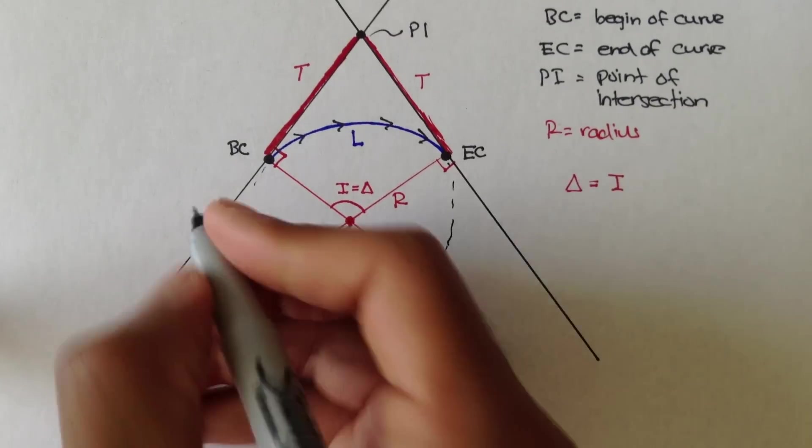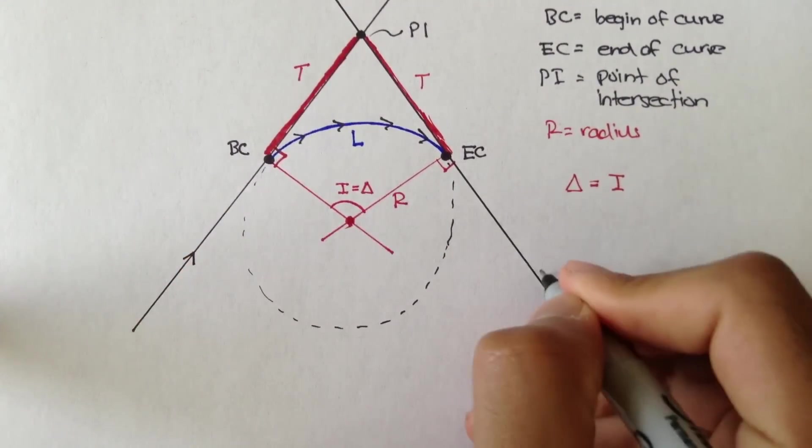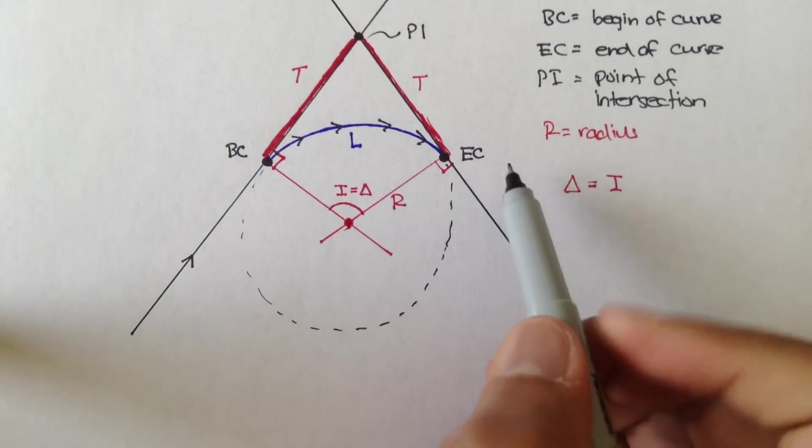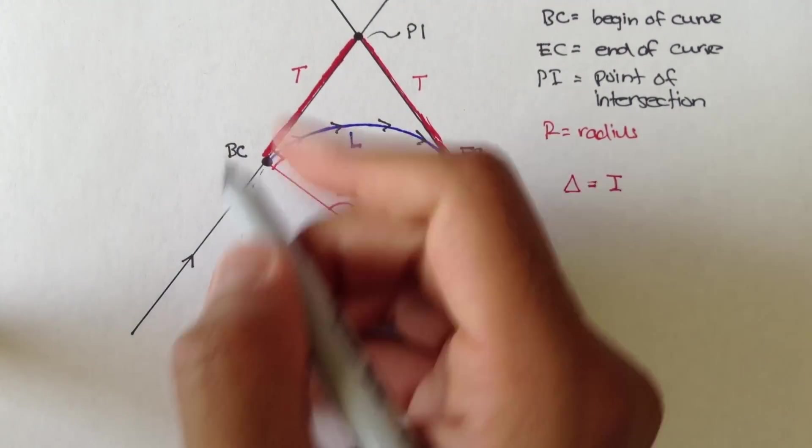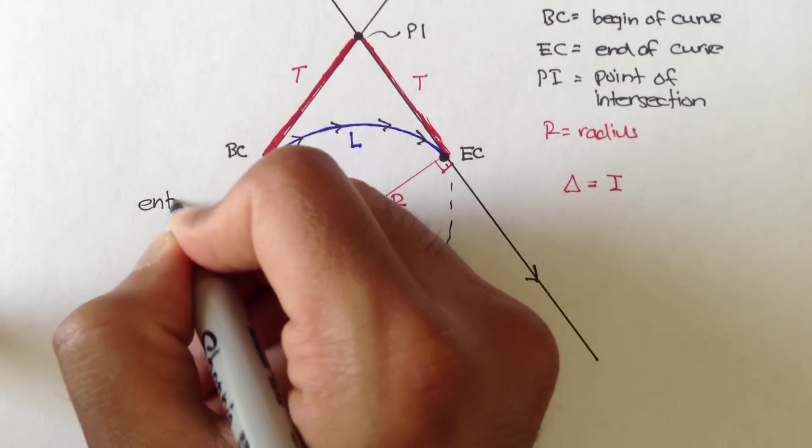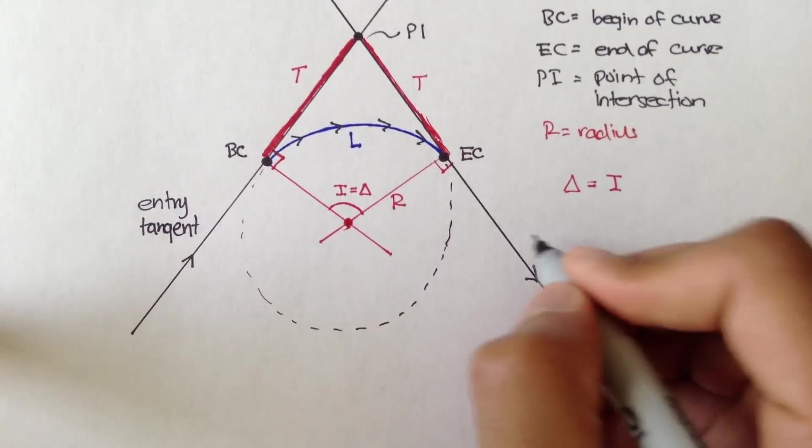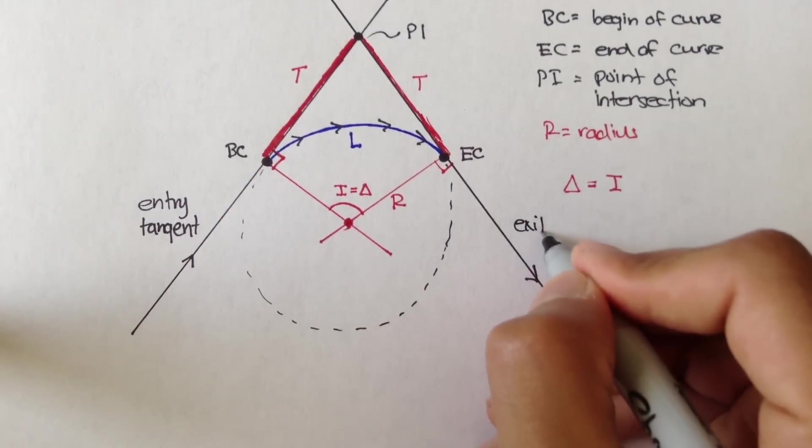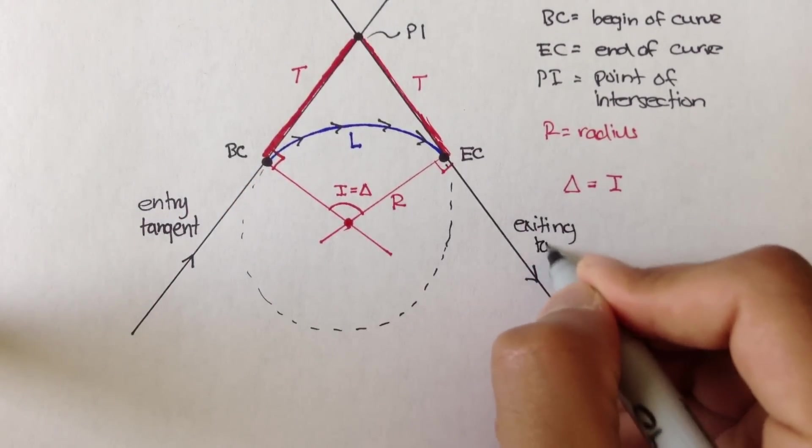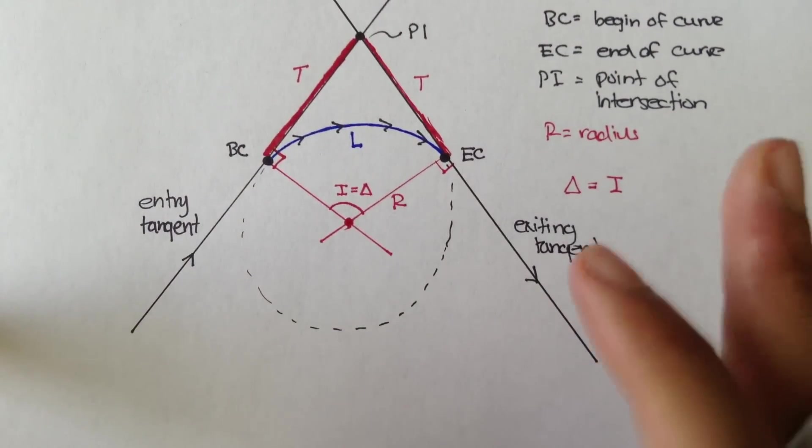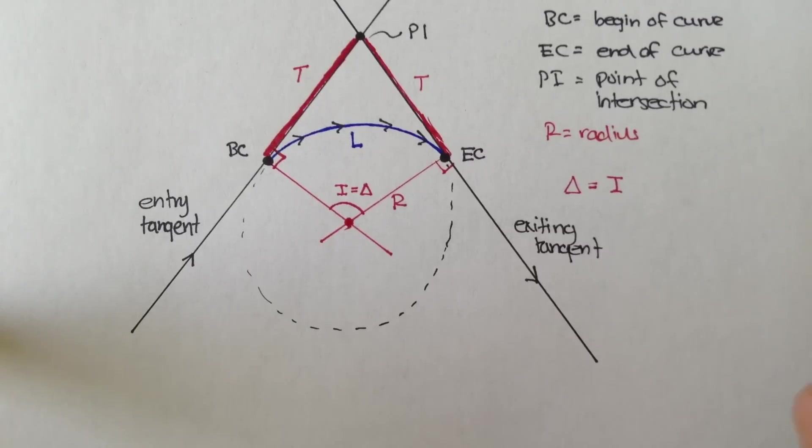These tangents, if the direction of travel on this curve is this way, this tangent is called the entry tangent, and this tangent is called the exiting tangent. So these are kind of the properties of some very simple horizontal curves.